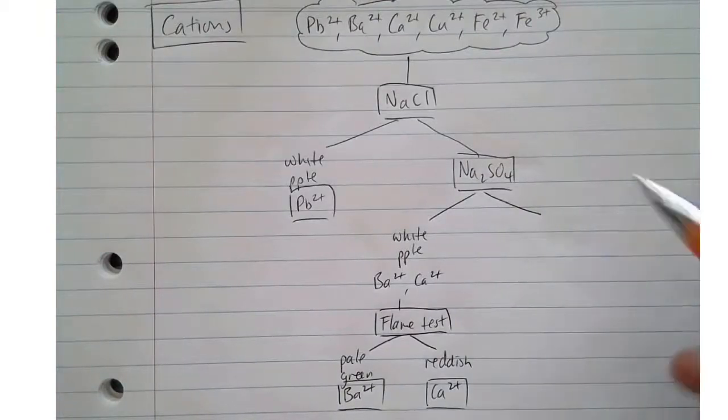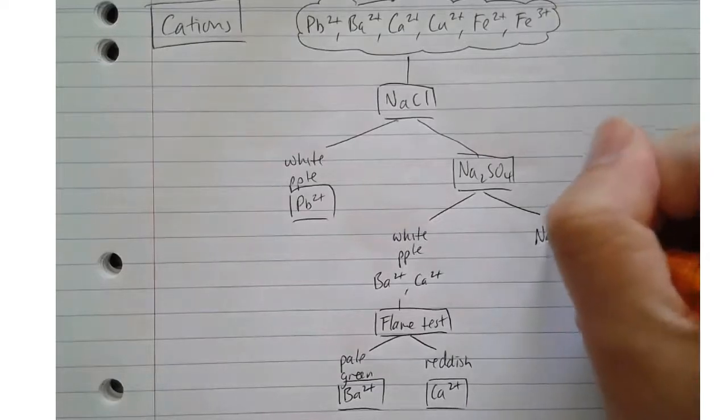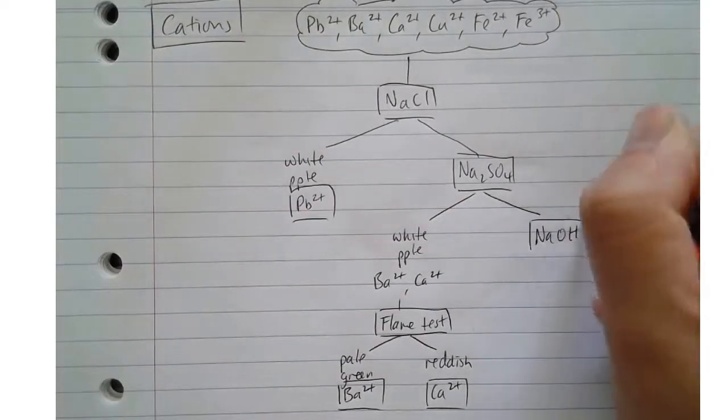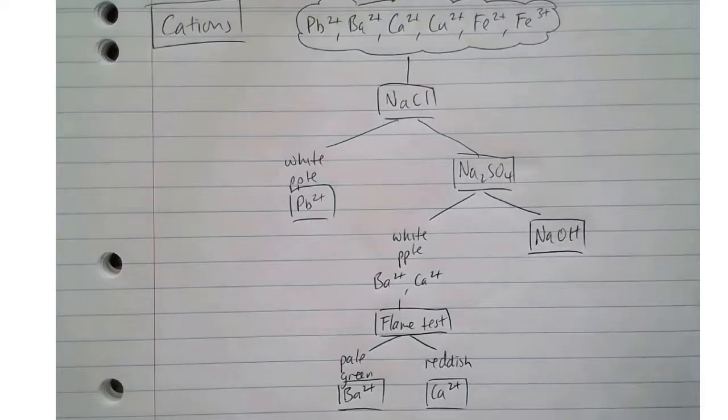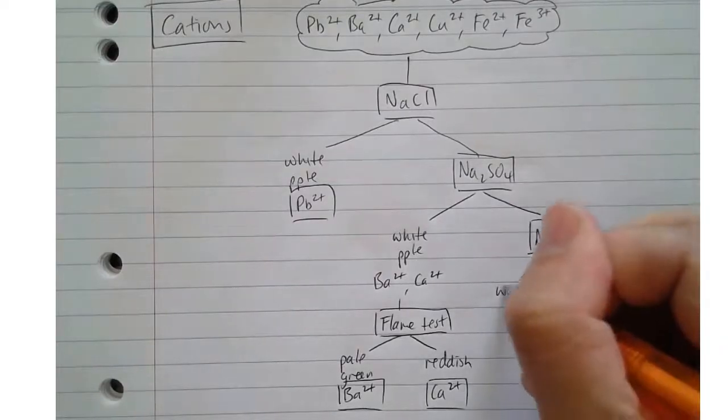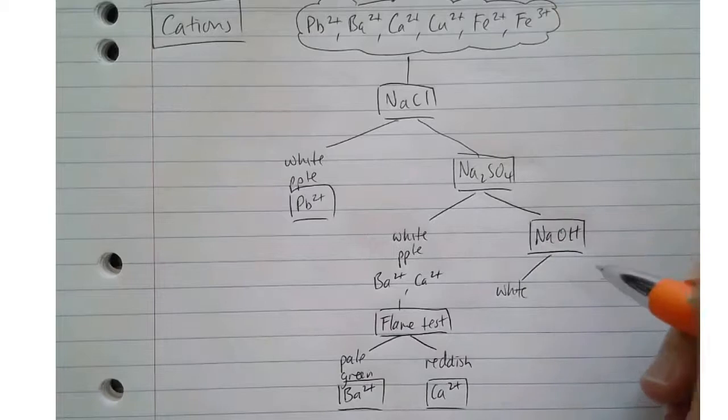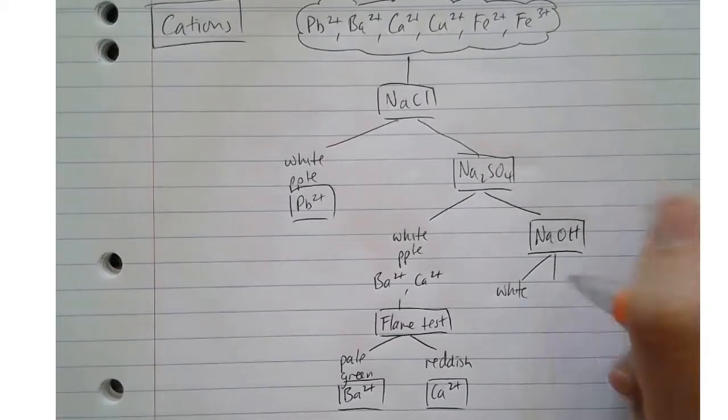So if we've got no precipitate with sodium sulphate, the next thing that we add is sodium hydroxide. What happens then is we'll get a precipitate with the remaining three - we'll get white, brown, or blue.